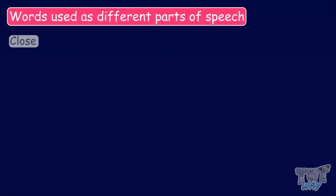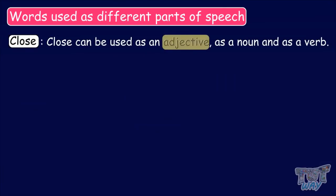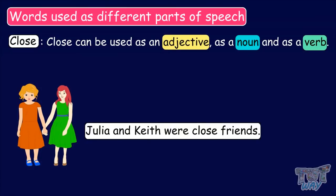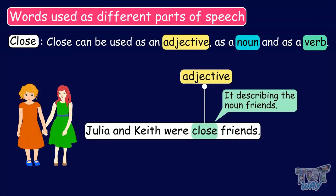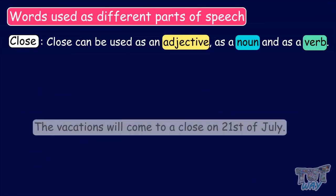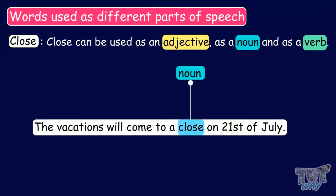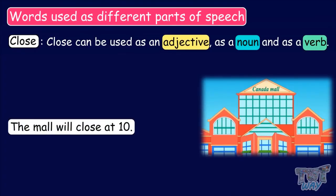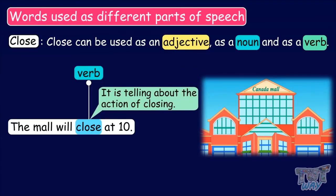Our next word is 'close'. Close can be used as an adjective, as a noun, and as a verb. Julia and Keith were close friends. Here, the word close is an adjective, as it is describing the noun friends. The vacations will come to a close on 21st of July. Here, the word close is a noun, as it is a naming word for end. The mall will close at 10. Here, the word close is a verb, as it is telling about the action of closing.